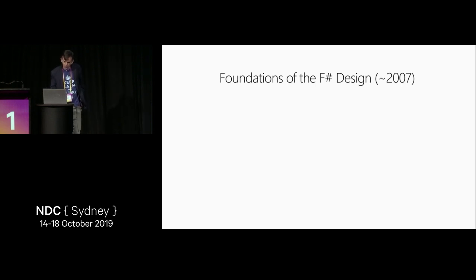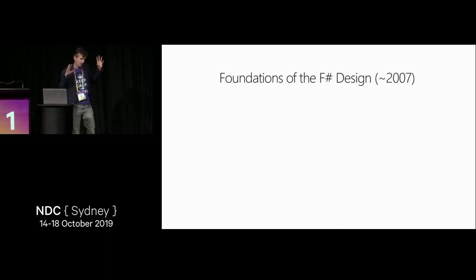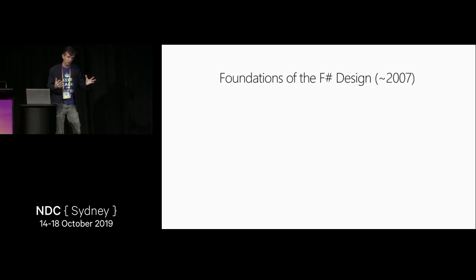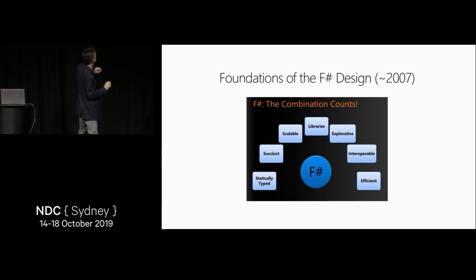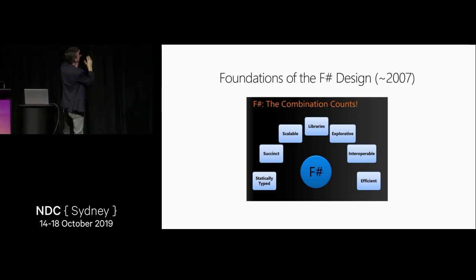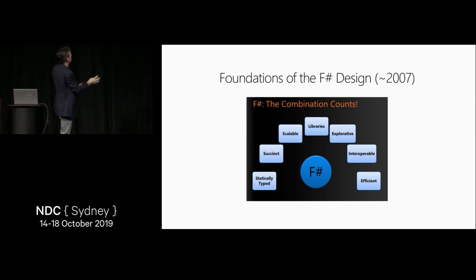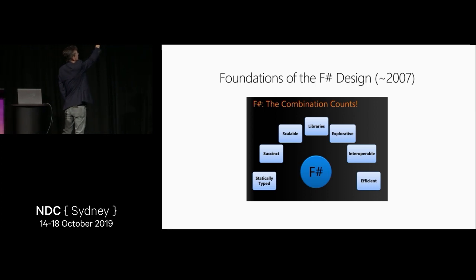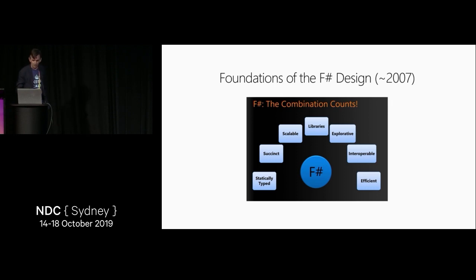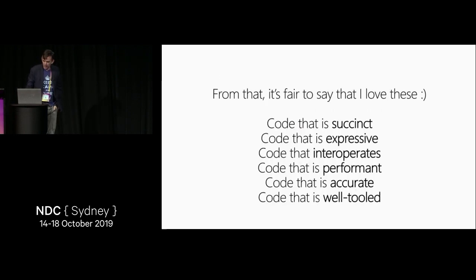Another way to understand what F-sharp code I love is to go back to the foundations of the F-sharp language design. Back in 2007, when I first started presenting on F-sharp to major audiences inside Microsoft, the point of F-sharp was to combine: it's a statically typed language, a succinct language, a scalable one, with libraries, explorative, interoperable with the world, and one that executes efficiently. That's code I love — code with those characteristics.